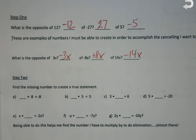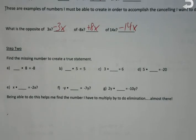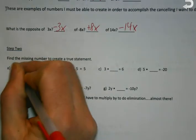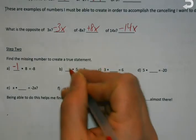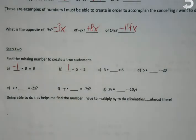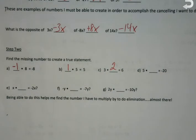So now, step 2 of the process. Finding missing numbers to create something. Because sometimes when I add down, the numbers aren't going to cancel right away. So, for instance, what do you multiply times 8 to get negative 8? Negative 1. What about 5 to get 5? 1. 3 to get 6. Oh, we're rolling. 5 to get negative 20.